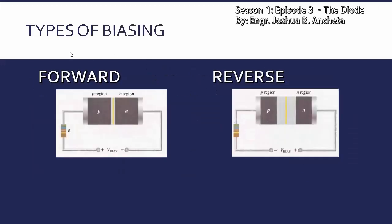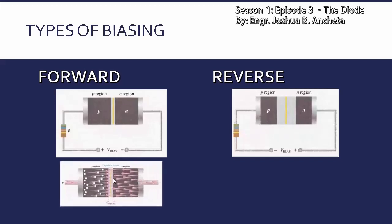Meron tayong two types of biasing: ito yung forward and reverse biasing. Sa forward biasing, yung supply natin — tatawagin nating V bias — yung positive terminal niya connected sa P region, and yung negative terminal ng V bias connected sa N region. With this type of biasing, nagkakaroon ng extra energy yung mga electrons dito sa N region, at na-overcome nila yung barrier. So therefore, this type of biasing — yung forward biasing — it allows the flow of electrons or yung electric current.